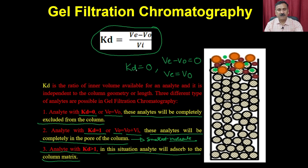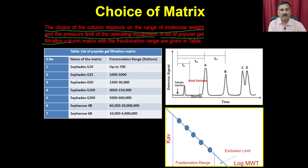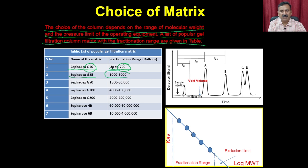You can use different types of matrix for gel filtration chromatography. The choice of column matrix depends on the range of molecular weight and the pressure limit of the operating equipment. For example, G10 has a fractionation range of 0–700 Daltons, G25 has 1,000–5,000 Daltons, and so on. You can use the fractionation range as a criterion to choose the matrix of your choice.